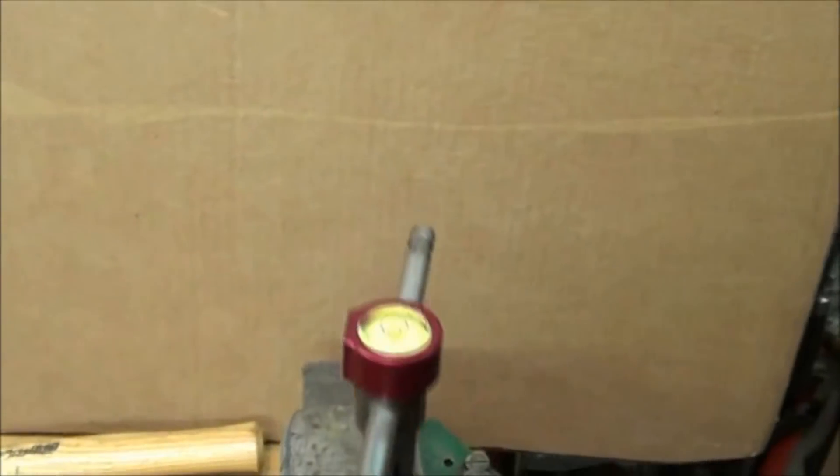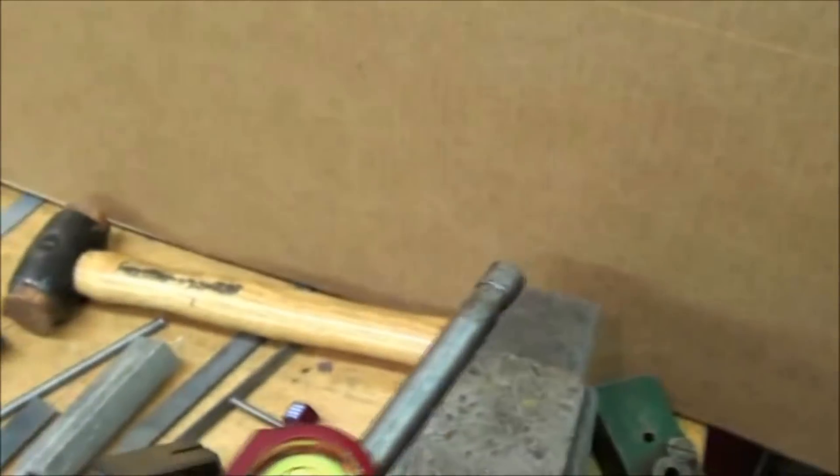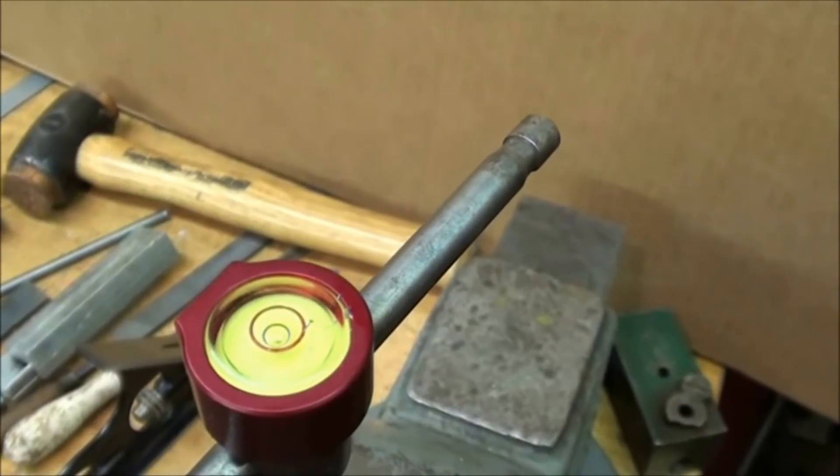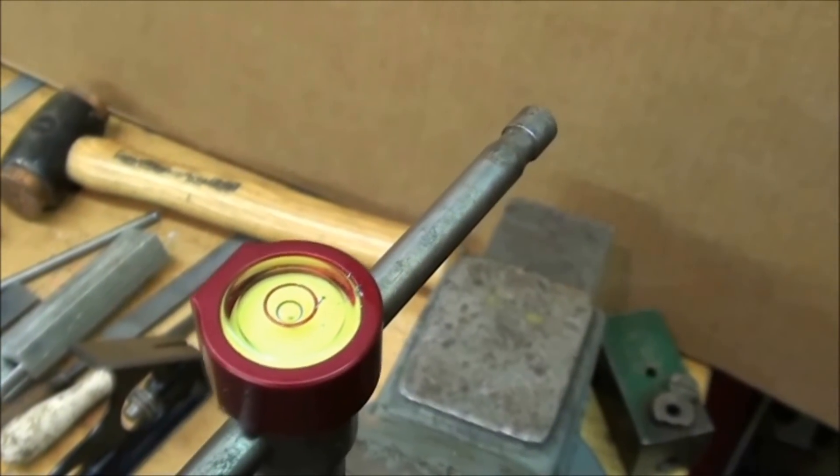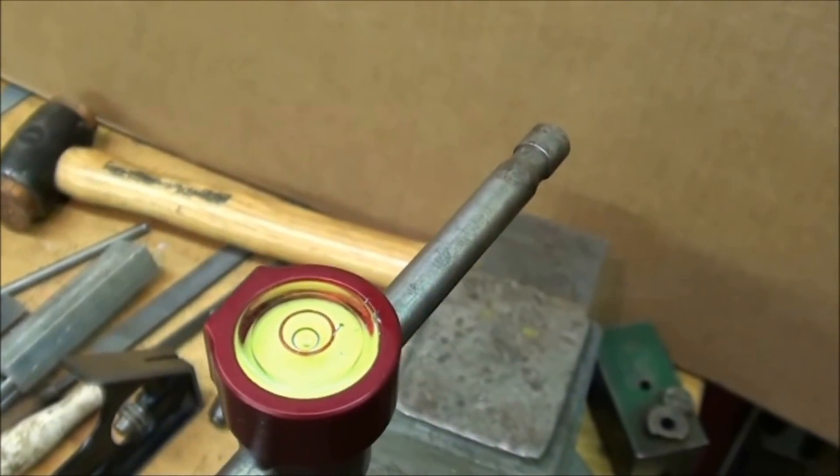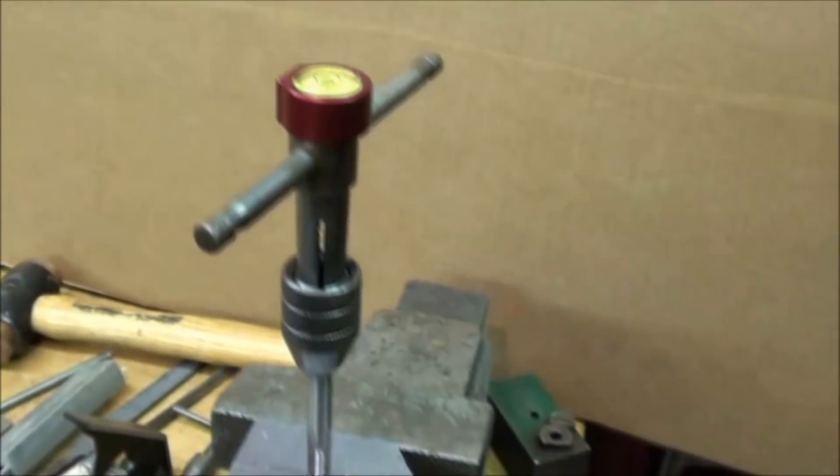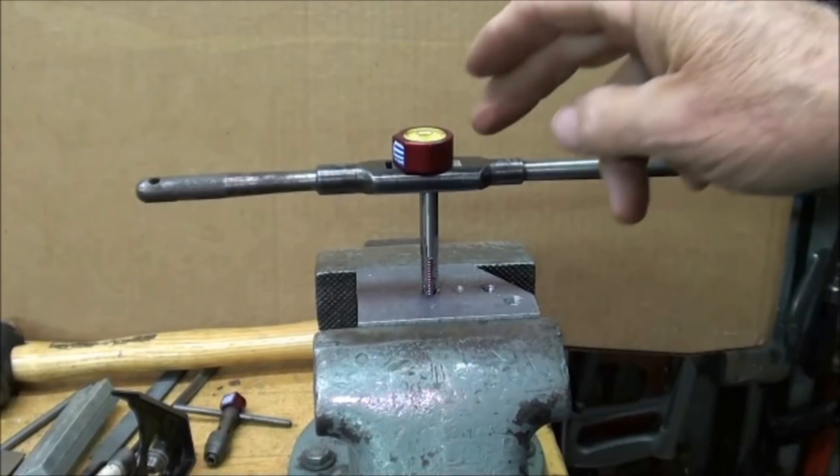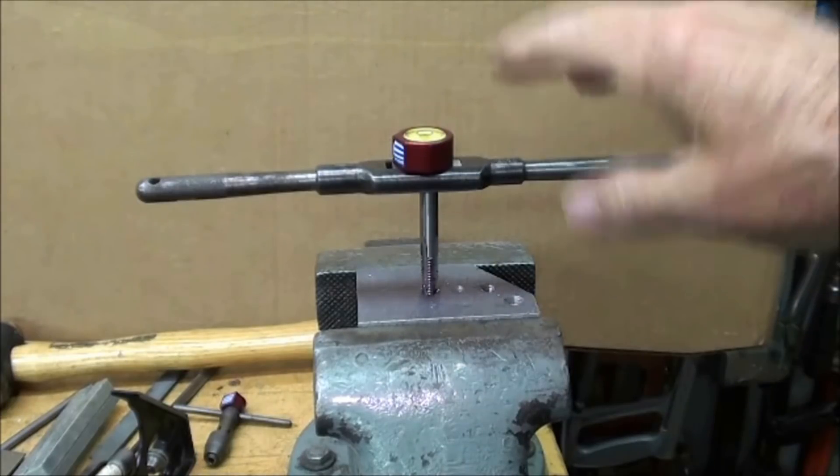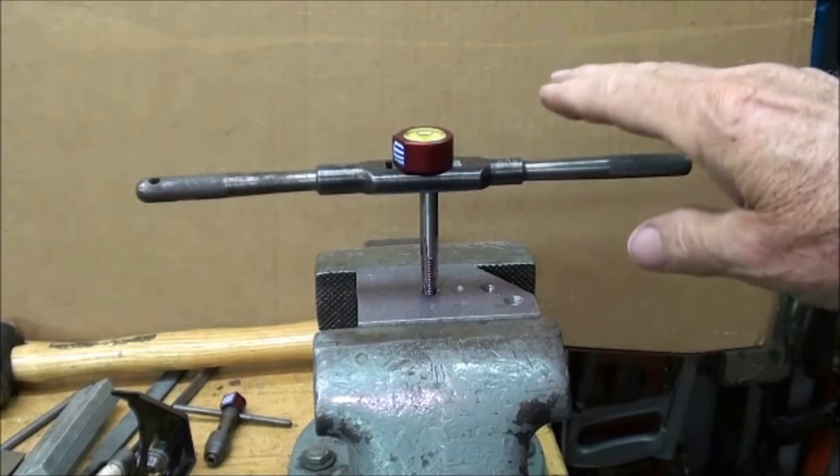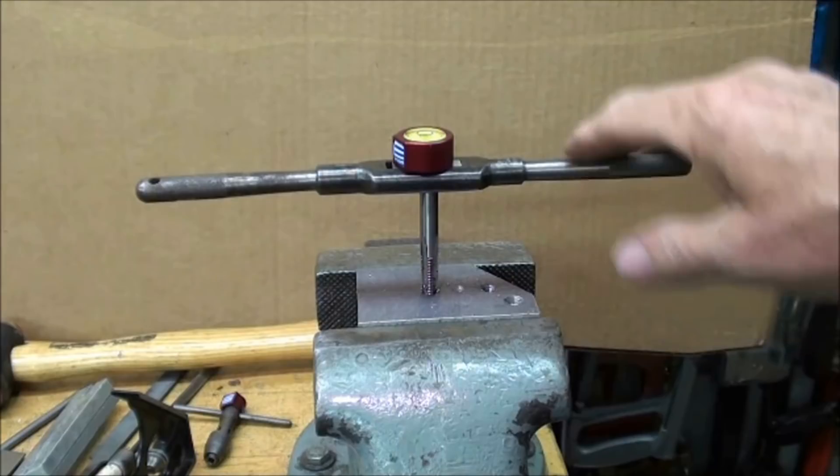Let's take a close up look of the level. And the bullseye is right in the middle. The directions do not show this. But I don't see any reason why you can't use it on a regular tap handle as well.